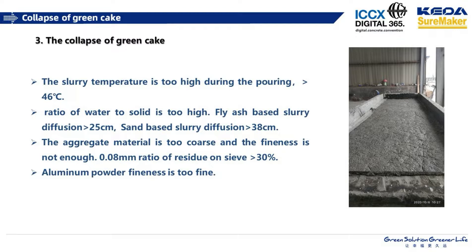Another possible cause is the slurry temperature being too high during pouring. According to our experience, the slurry temperature should not exceed 46 degrees. Also, we may consider whether the slurry thickness is too low, the aggregate is too coarse, or the fineness of slurry is not enough. We should also consider the aluminum powder — if its fineness is too high, it will cause the speed of gas forming to be too fast at an early stage while the slurry viscosity does not increase at the same time. This causes the slurry to be unable to hold bubbles in a stable condition, and some bubbles overflow from the slurry, resulting in overall collapse.